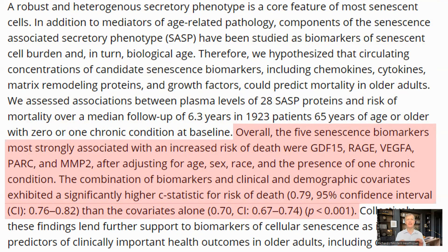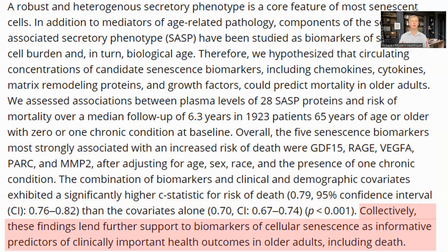Five of the biomarkers were strongly correlated with increased risk of death after adjusting for sex, age, race, and the presence of a chronic disease. A C statistic is a measure of how good a fit a model is for a set of data, with values between 0 and 1, where 1 means the model exactly predicts the data. Using clinical and demographic data yielded a C statistic of 0.7, while including the senescence biomarker raised this to 0.79, making this a better model, with a p-value of 0.001. The conclusion is that biomarkers of senescence can be used as a clinically important predictor of health outcomes in older adults.